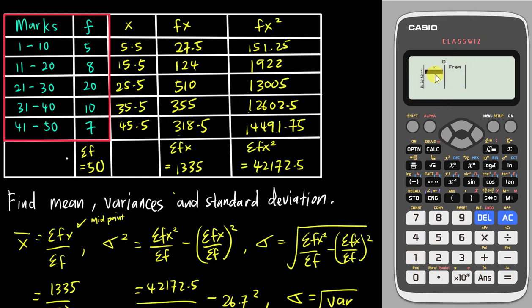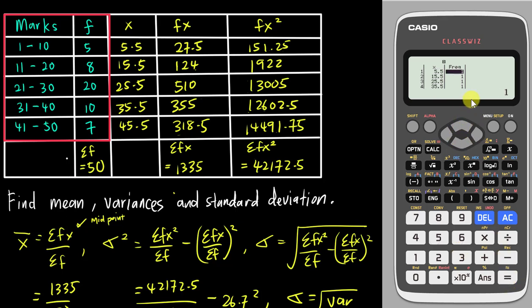Now you can see both x and frequency columns. Enter all the x values: 5.5, 15.5, 25.5, 35.5, and 45.5. By default all frequencies are preset to 1, so you need to enter the actual frequencies: 5 for the first, then 8, then 20, then 10, and the last one is 7.